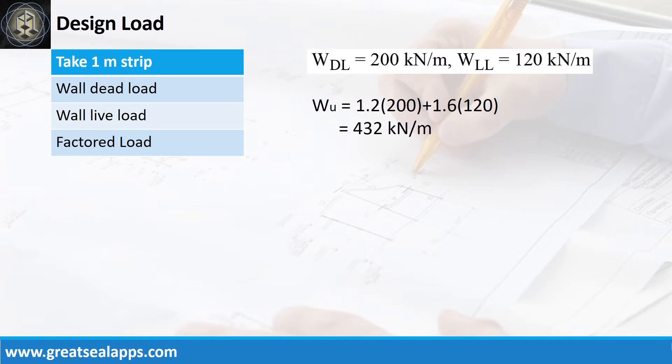The wall footing carries a uniform dead load of 200kN per meter and uniform live load of 120kN per meter for a factored uniform load of 432kN per meter.